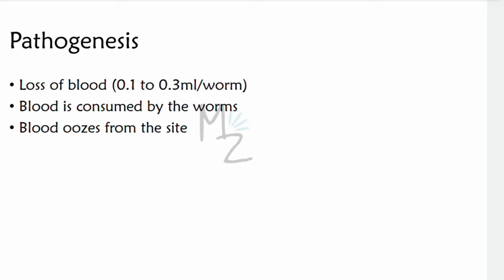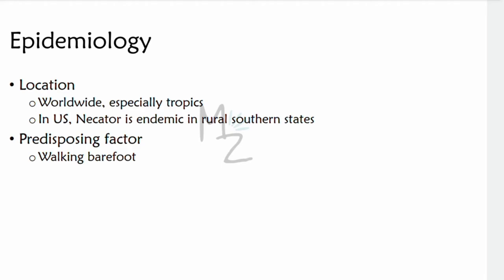Pathogenesis: the major damage is due to the loss of blood at the site of attachment in the small intestine. Up to 0.1 to 0.3 milliliters of blood is lost per worm per day. Blood is consumed by the worm and also oozes from the site in response to an anticoagulant made by the worm. Due to blood loss, iron deficiency anemia can occur. Weakness and pallor accompany the microcytic anemia caused by blood loss, and these symptoms occur in patients whose nutrition cannot compensate for the blood loss.